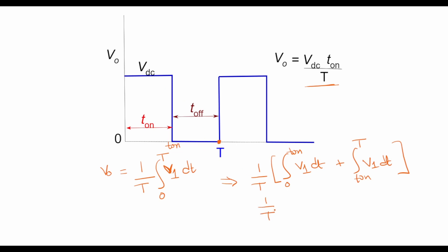So 1 over T integral 0 to T_on, from 0 to T_on the value is nothing but the supply Vdc, dt. And from T_on to T the value is 0. So this integral vanishes and I am left with this. So if I integrate it, I would get 1 over T, Vdc times T.